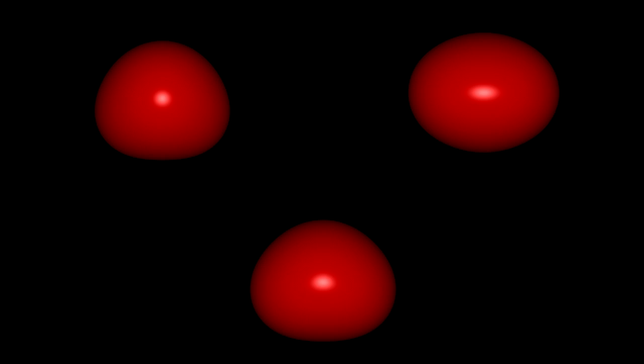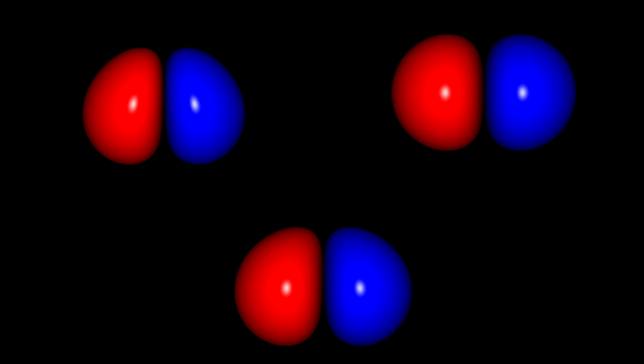The next highest energy orbital is a slightly triangular shaped cloud that engulfs all three nuclei. The next orbital is a two-lobed structure. The wave function is positive in the red region and negative in the blue, with one hydrogen nucleus in each lobe.